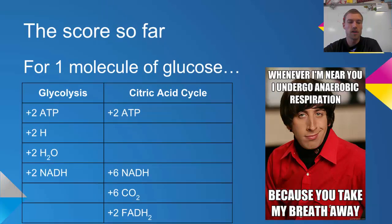For one molecule of glucose, if we look at glycolysis and the citric acid cycle, we've got four ATPs, two hydrogens, two H2Os, eight NADHs, six CO2s, and two FADH2s.